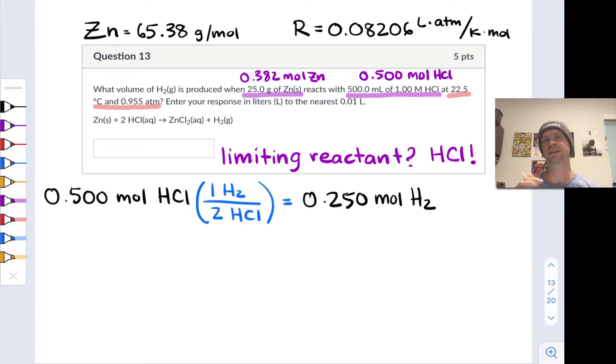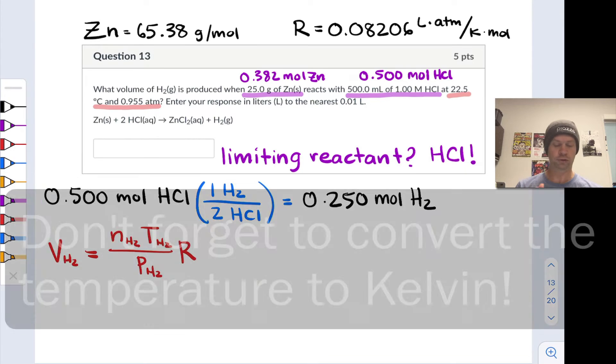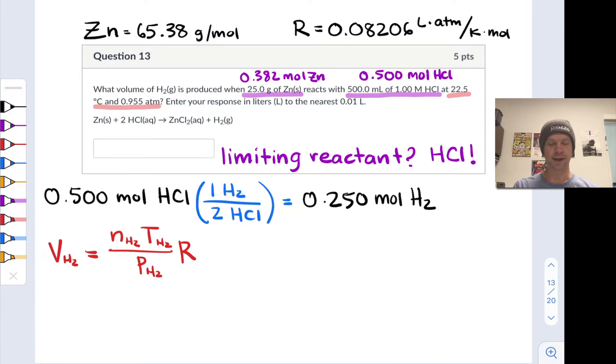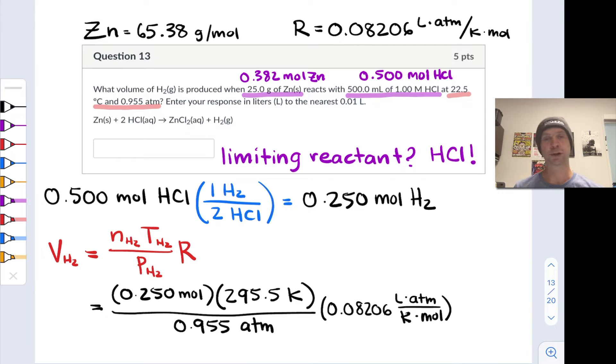So what we're going to do is take the ideal gas law, PV equals nRT, and rearrange to solve for volume. And in doing that, we arrive at this equation here. And we can go ahead and plug everything in. We're using 0.08206 liter atmospheres per Kelvin mole to ensure that things divide out nicely. Atmospheres divide out with atmospheres, moles with moles and Kelvin with Kelvin. And we arrive at a final volume of 6.35 liters at the end of this.